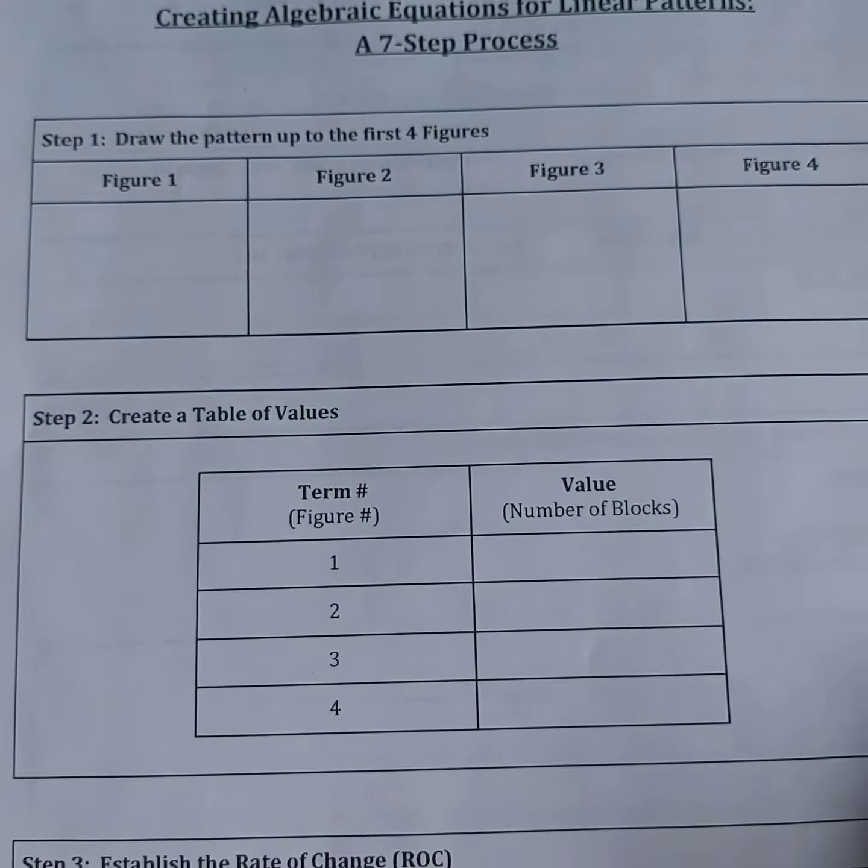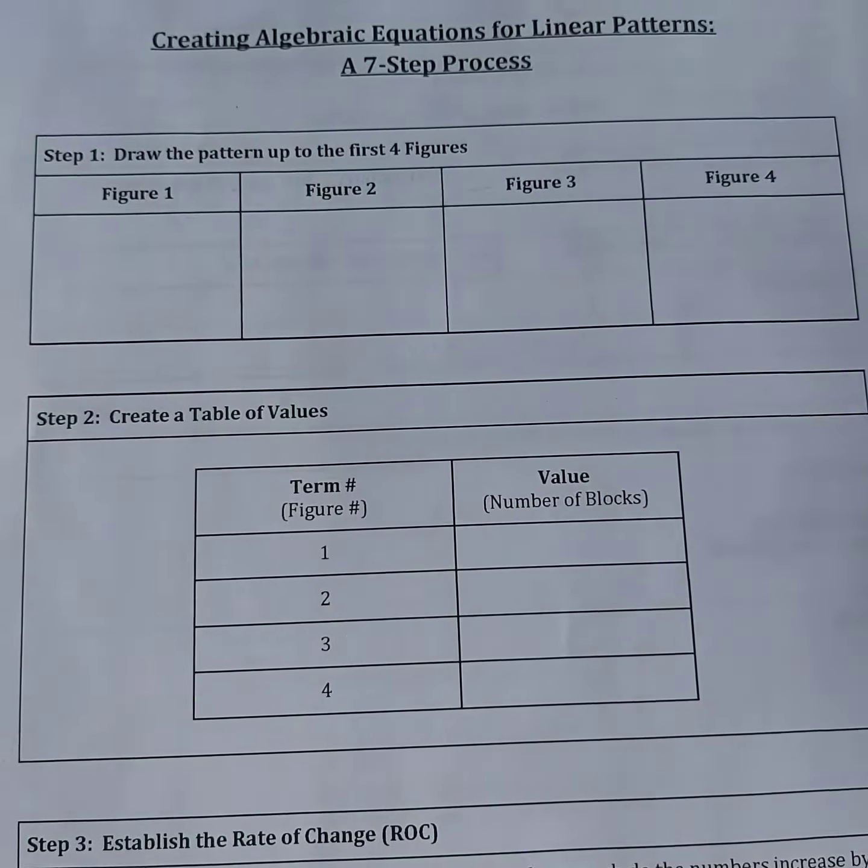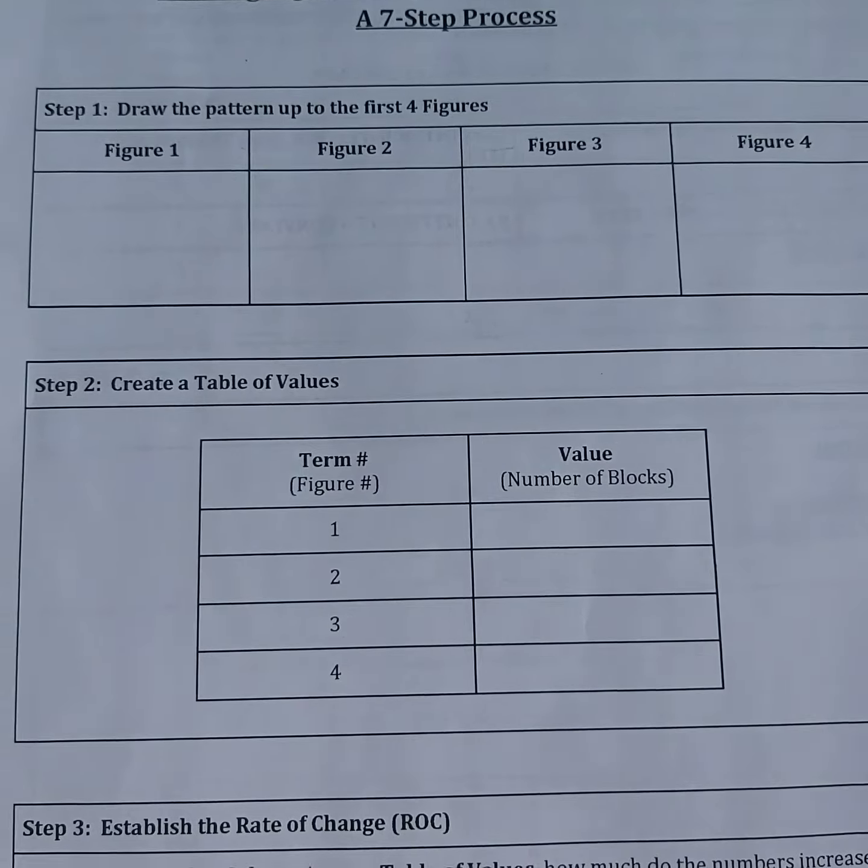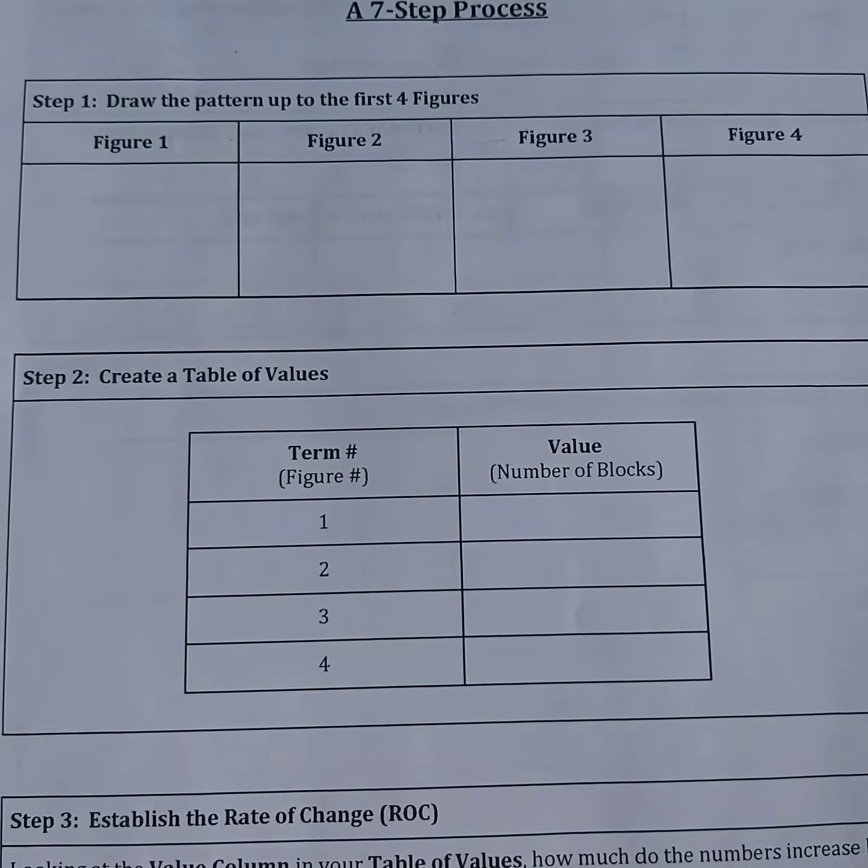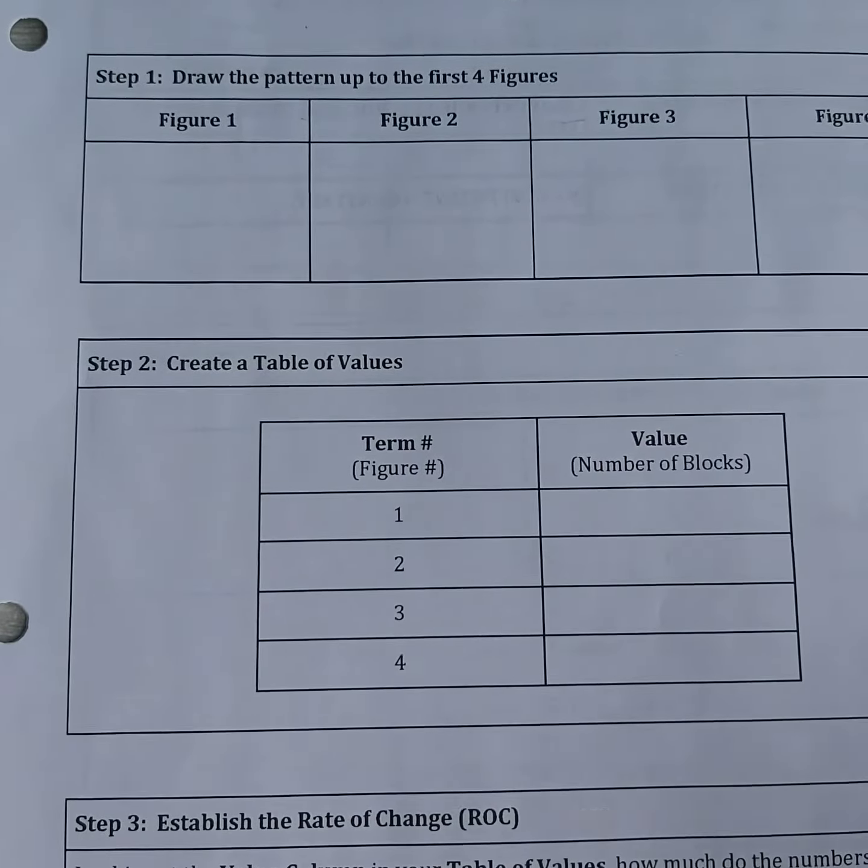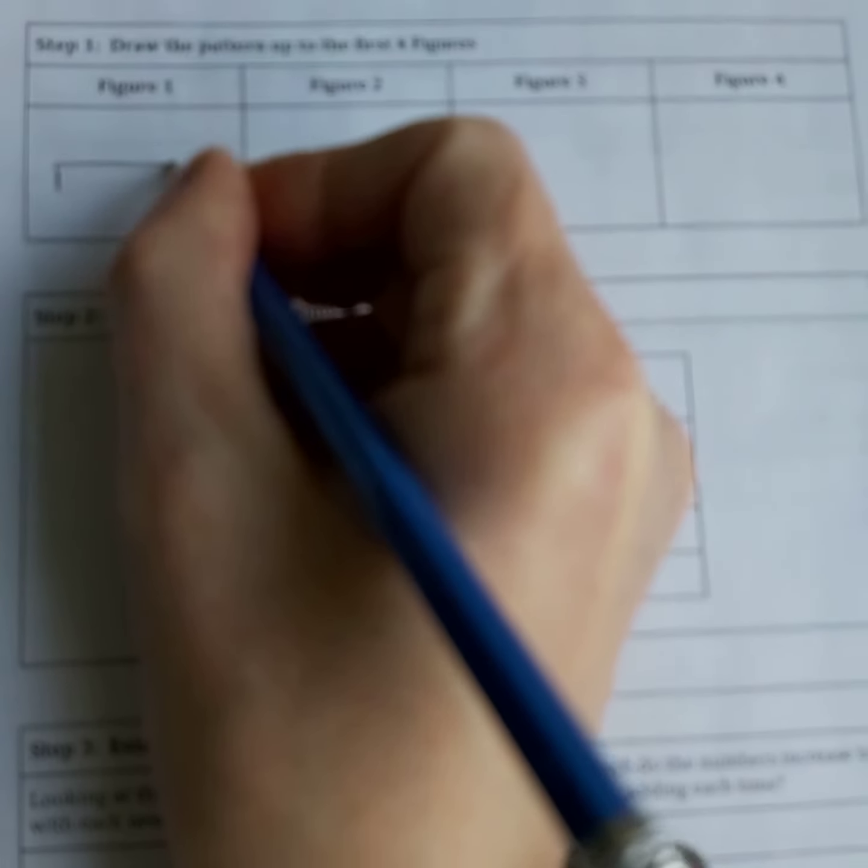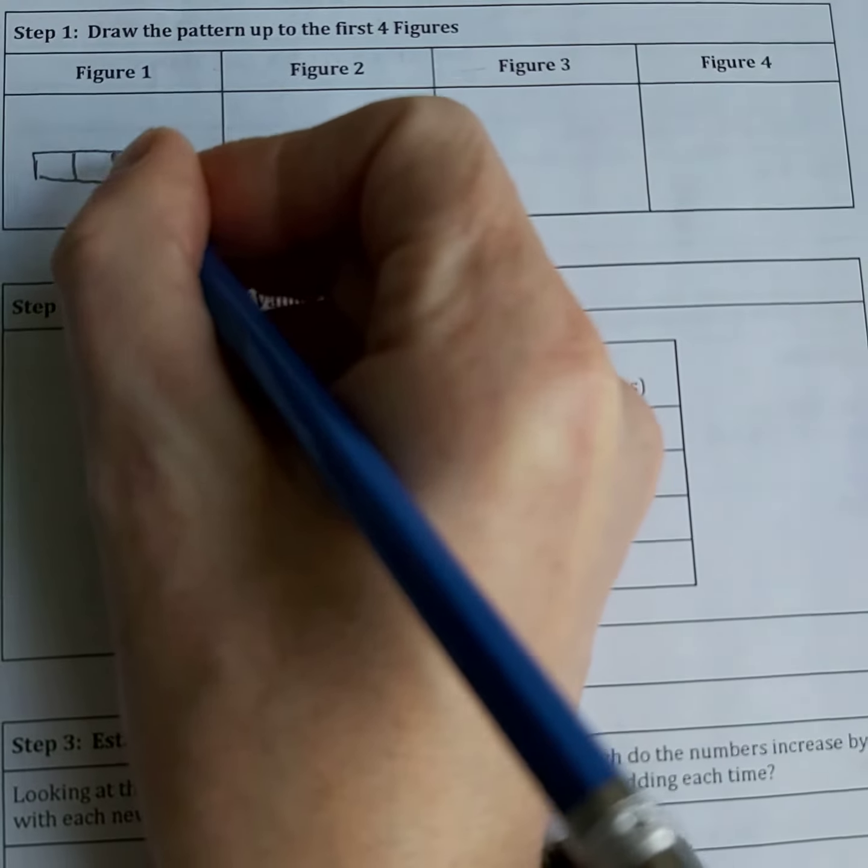So the first step in the whole process is to draw the pattern up to the first four figures. The word 'figures' is just a fancy way of saying drawings. And so I'm gonna start off with a basic shape that looks like this, and I want you to draw this shape on your page as well.